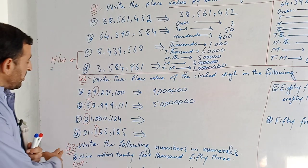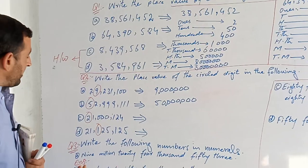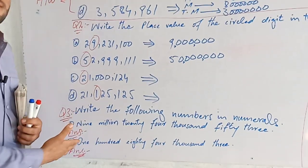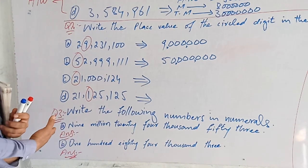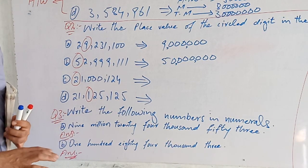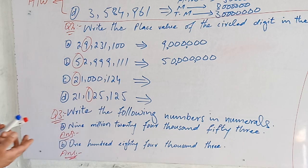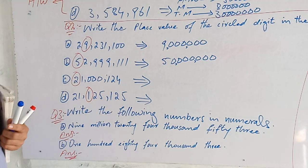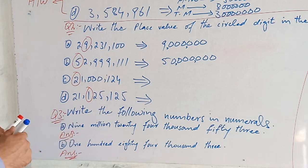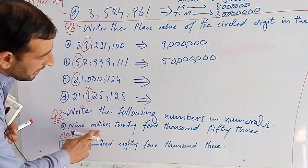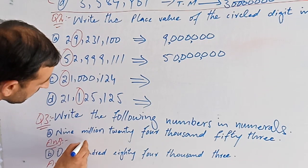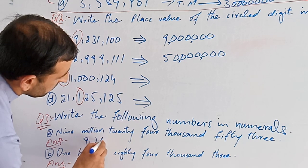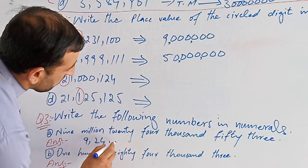Number three. The lectures are pretty good. It's easy to read in class. I would like to use the numerals and words. 9 million, 24,000, 53. 9 million, 24,000, 53.